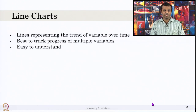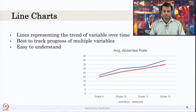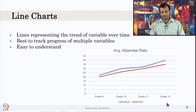Let us move on to the next chart — the line chart. In a line chart, lines represent a trend of a variable over time. The line chart is very common and it is very useful to track multiple variables over time. It is very easy to understand, which is why it is used most commonly. Let us look at the line chart of average absentee rate from grade 9 to grade 12 across boys and girls. It is not over time — it is over different grades.